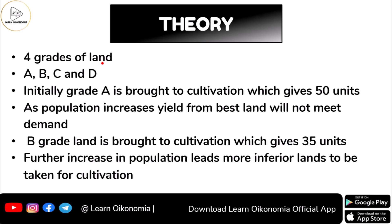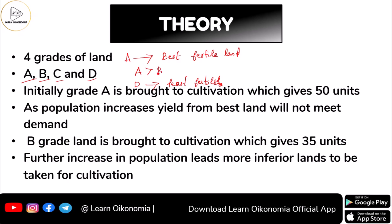As per Ricardo, there are four grades of land: Grade A, Grade B, Grade C, and Grade D. Grade A is the best, most fertile land, and Grade D land is the least fertile land. Ordering them by fertility: A has the most fertility, then B, then C, and D is the least fertile.